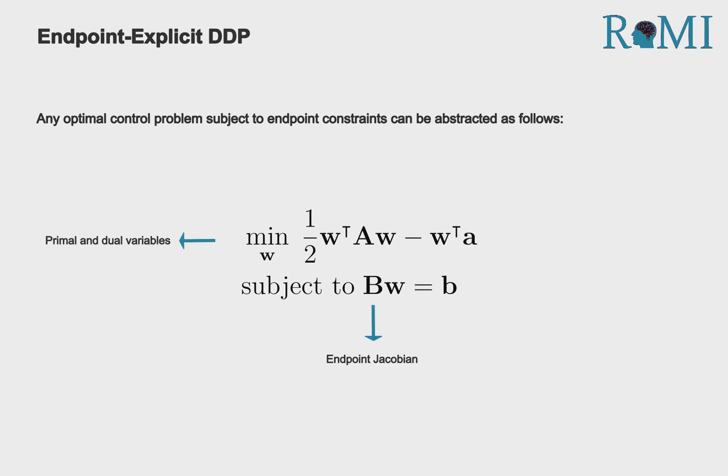Moreover, B represents the Jacobian of the endpoint constraint, while A is the large banded matrix that describes optimal control problems without endpoint constraints.